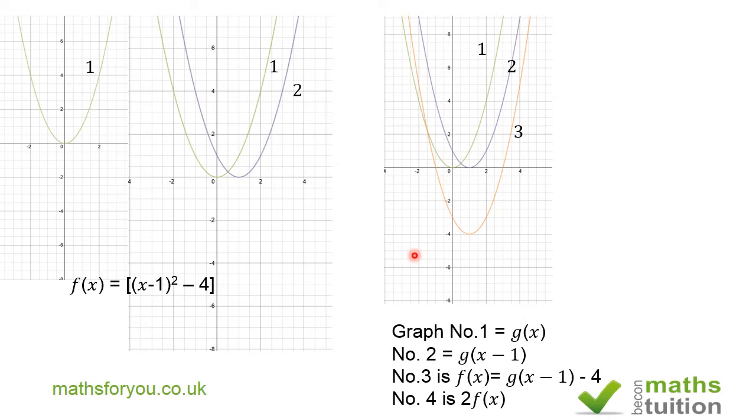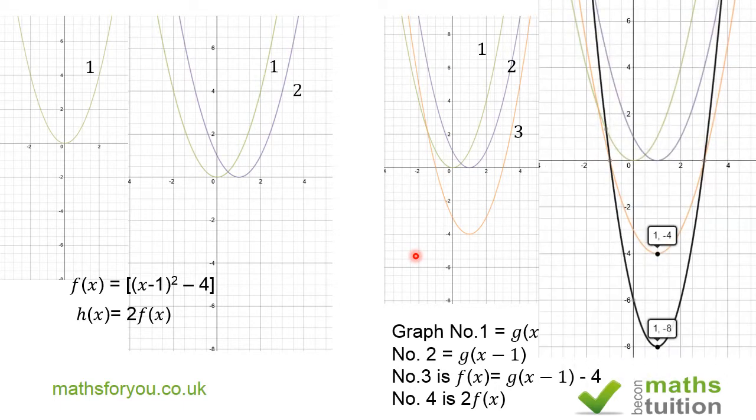Now what I've done here is to create a summary of all the graphs we did before. Now for the last graph, the graph of h of x is equal to two times f of x. So our graph then becomes this one here, which is graph four.